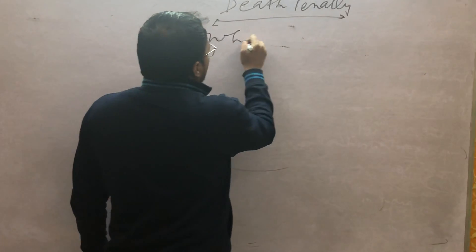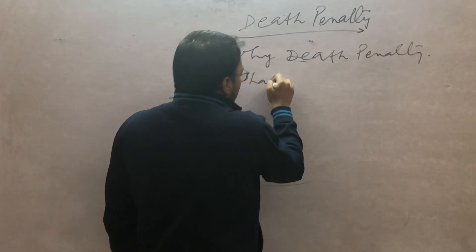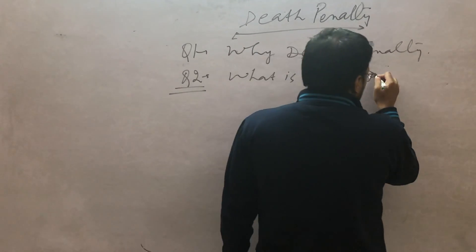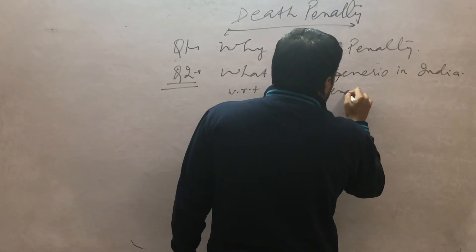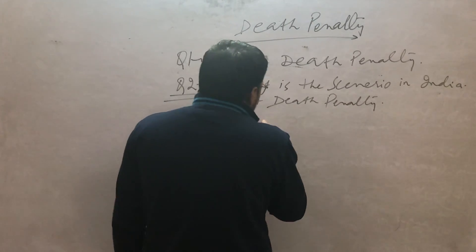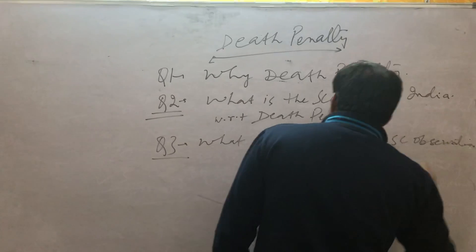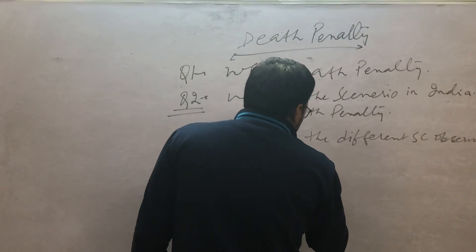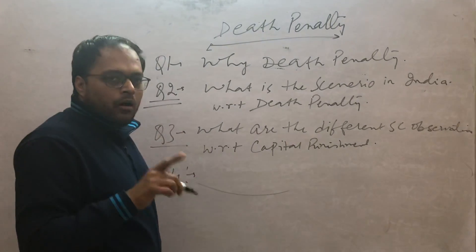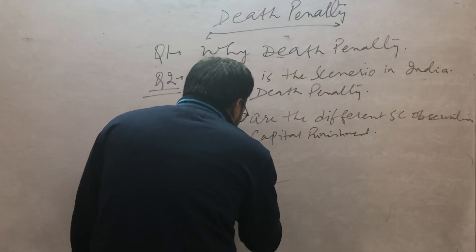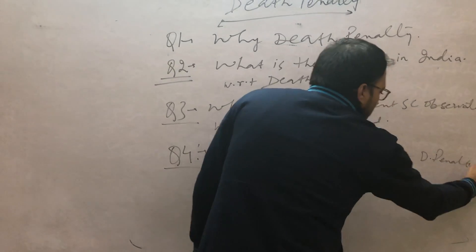The four questions are: First, why death penalty? Second, what is the scenario in India with respect to death penalty? Third, what are the different Supreme Court observations? Fourth, whether to abolish or not to abolish capital punishment. These are the four questions.